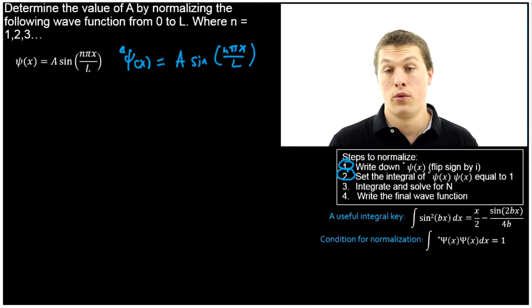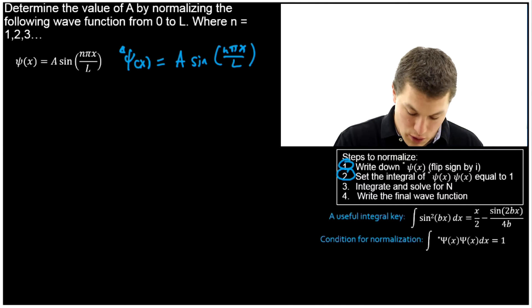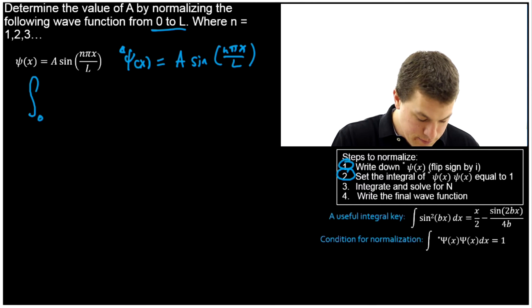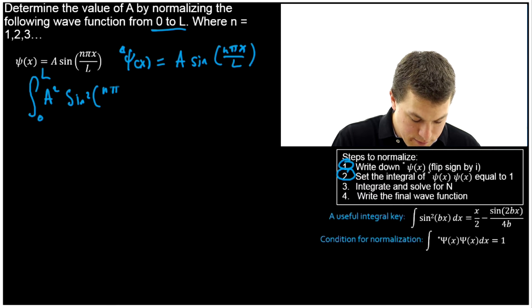And this is just the standard way to normalize a wave function. So we're going to say the integral, in this case from 0 to L because that's the size of our box, of A squared because we get 2 A's, and sine squared because we get 2 sines, dx is going to be equal to 1.